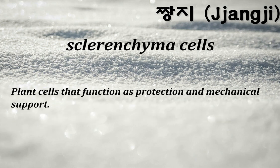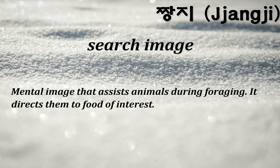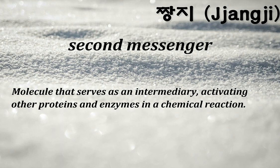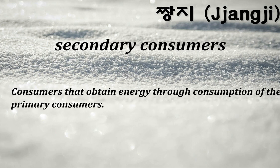Sclerenchyma cells: plant cells that function as protection and mechanical support. Search image: a mental image that assists animals during foraging and directs them to food of interest. Second messenger: a molecule that serves as an intermediary, activating other proteins and enzymes in a chemical reaction. Secondary consumers: consumers that obtain energy through consumption of the primary consumers.